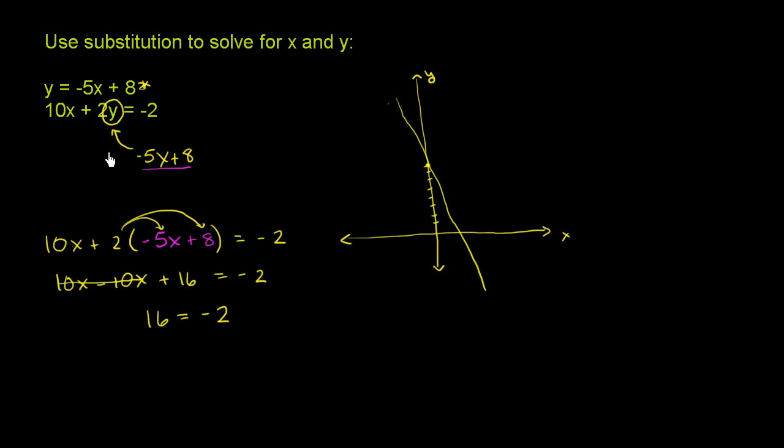That's this first equation right over there. The second equation, let me rewrite it in slope y-intercept form. So it's 10x plus 2y is equal to negative 2. Let's subtract 10x from both sides. You get 2y is equal to negative 10x minus 2. Let's divide both sides by 2. You get y is equal to negative 5x minus 1.